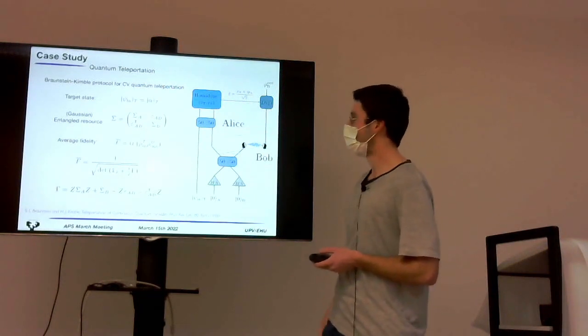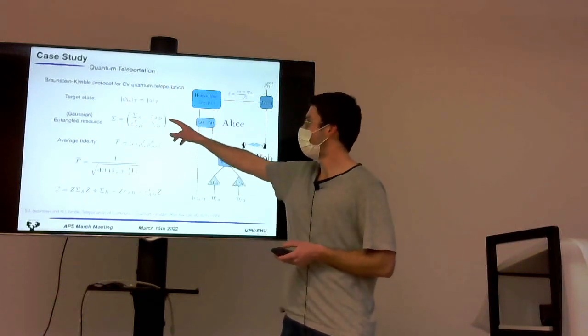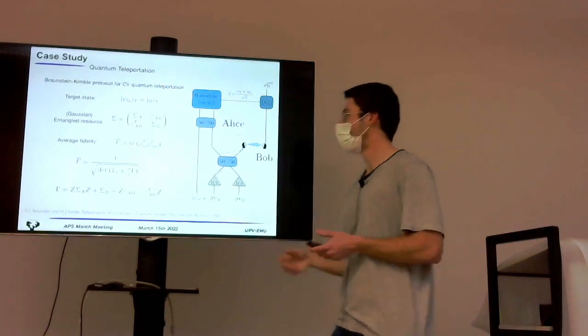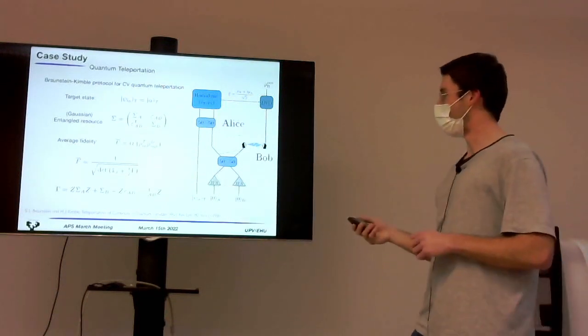who then applies a displacement, based on those measurement results, on the mode that he holds from the entangled state. And if you have a Gaussian pure unknown state, and a Gaussian resource, you can compute the average fidelity after you average over measurement results. You can compute it in that way.